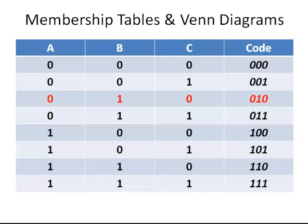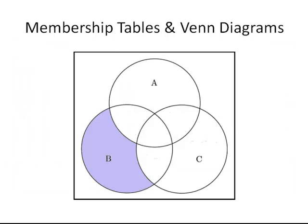We have the 0, 1, 0 region and this is part of B only. It is not part of A, it is not part of C, but it is part of B. So that corresponds to this region here — you can see it is enclosed by B but outside of A and outside of C.